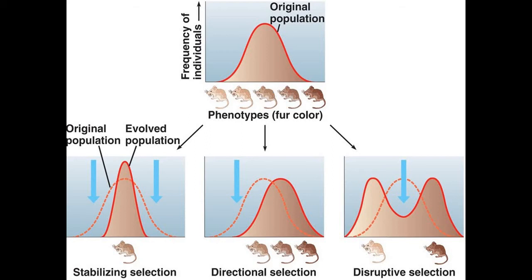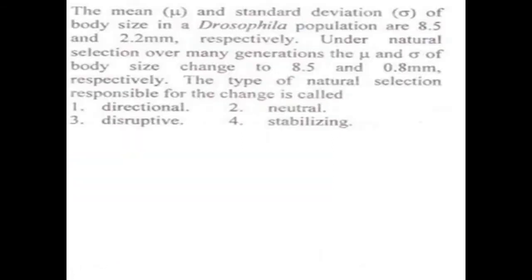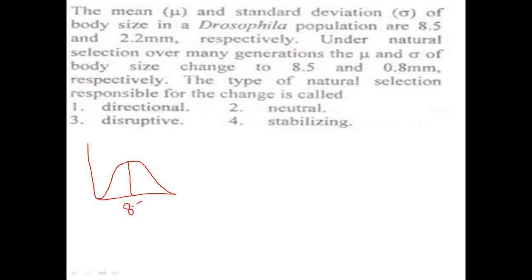Here is a question: the mean and standard deviation of body size in a Drosophila population are 8.5 and 2.2 millimeters. Let us draw a normal phenotypic distribution graph. Before any evolution, the original population had a mean of 8.5 millimeters and a standard deviation of 2.2.